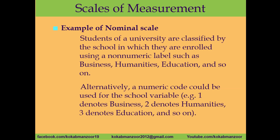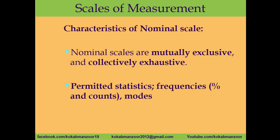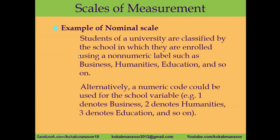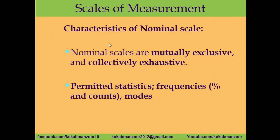The characteristics of the nominal scale are that categories are mutually exclusive — you will be in one of the categories. You cannot say you are studying business, humanities, and education all at once. Similarly, you are either male, female, or another category. Mutually exclusive means once one is selected, the other cannot be selected. The options are also collectively exhaustive. With this data we can use frequencies, counts, and mode.